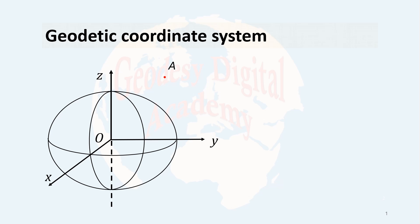Geodetic coordinates. Consider a point outside the surface of the reference ellipsoid. I can draw a normal to the ellipsoid from this point, and we all know that the normal to the ellipsoid does not go through the center of the ellipse. This curve is called the local meridian, and this curve is called the reference meridian.